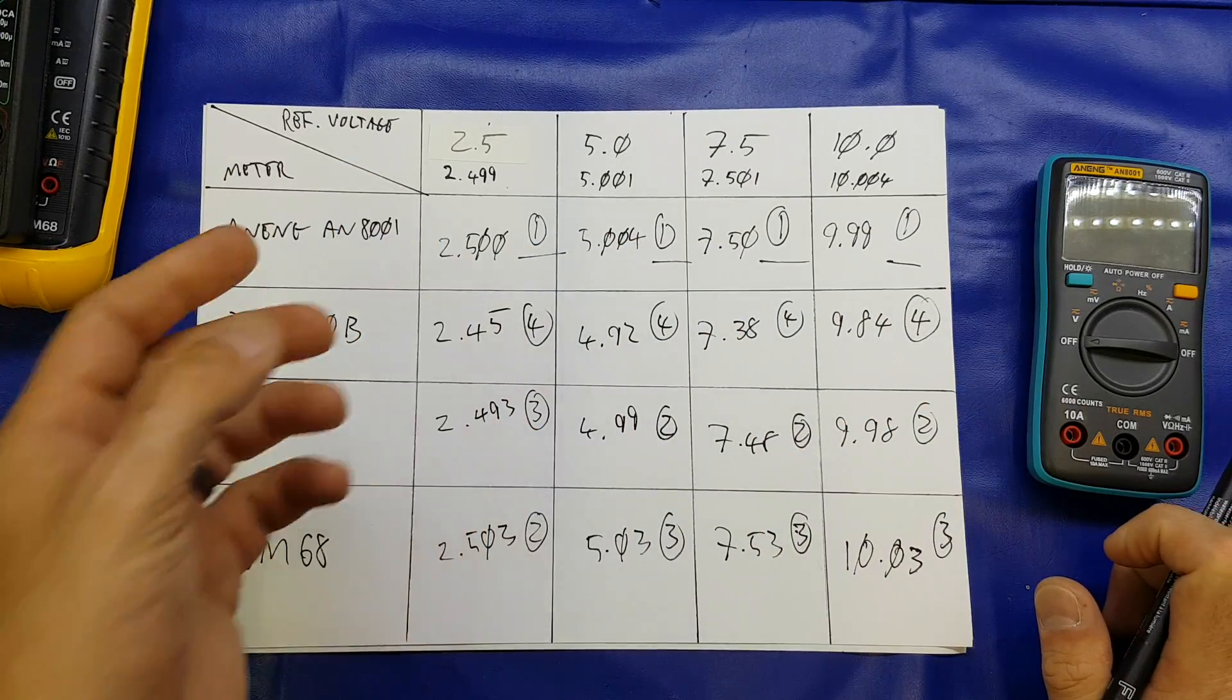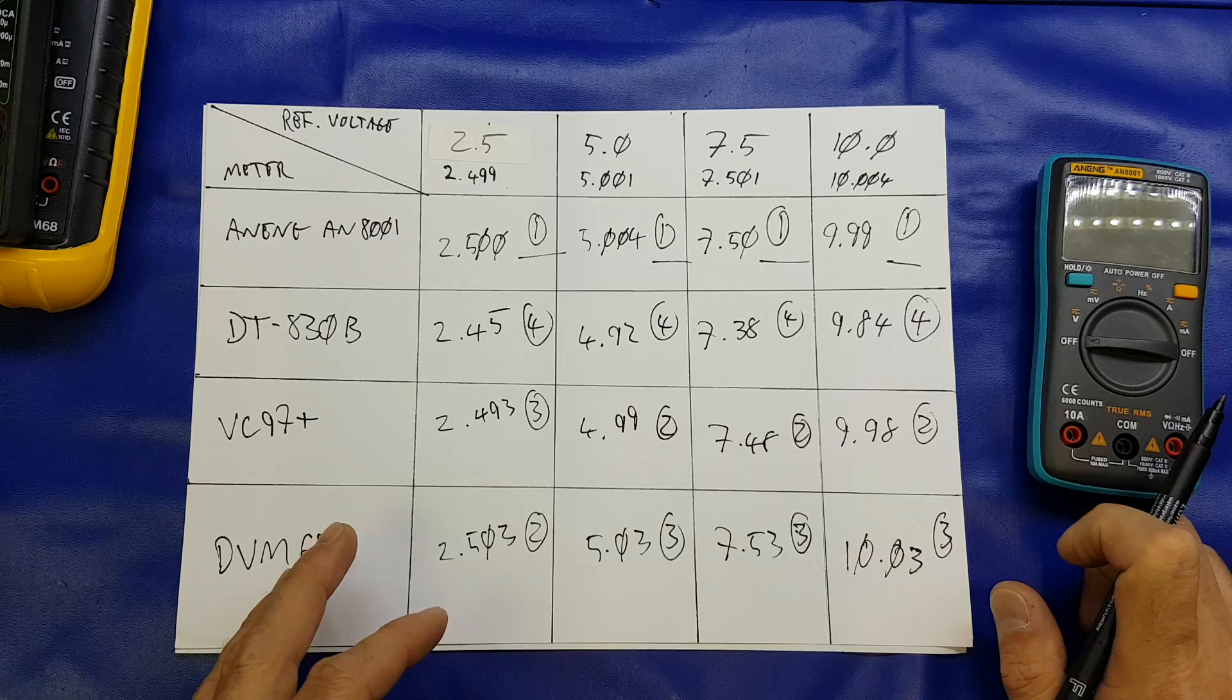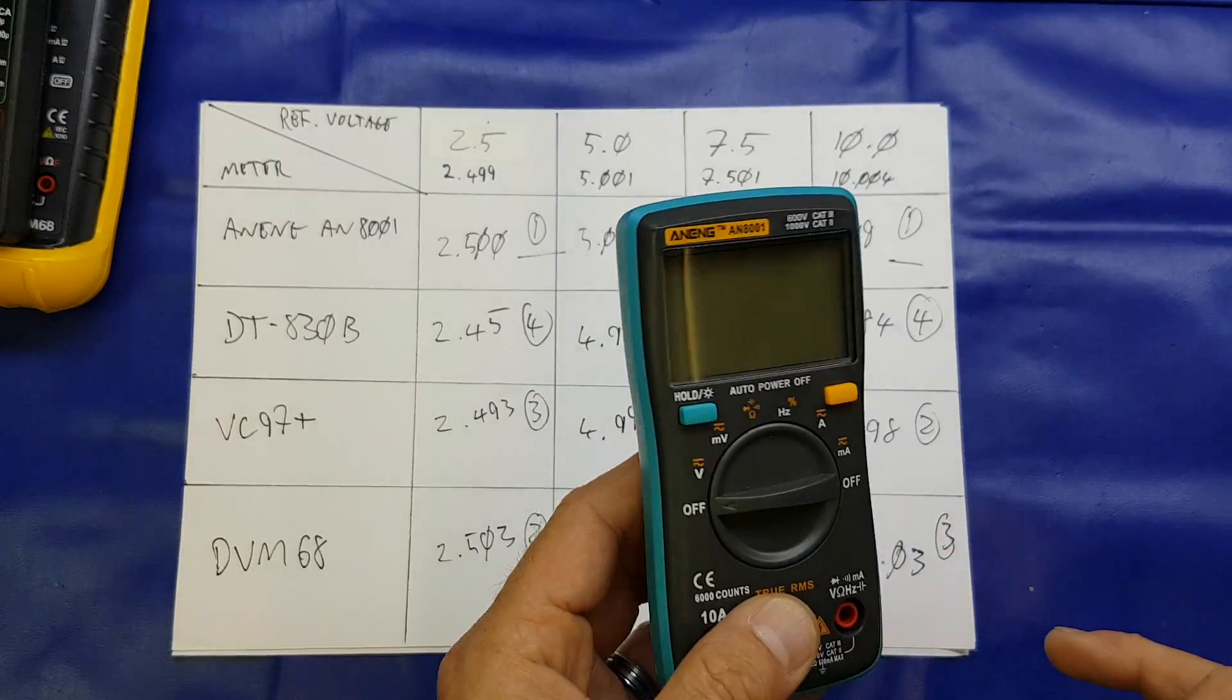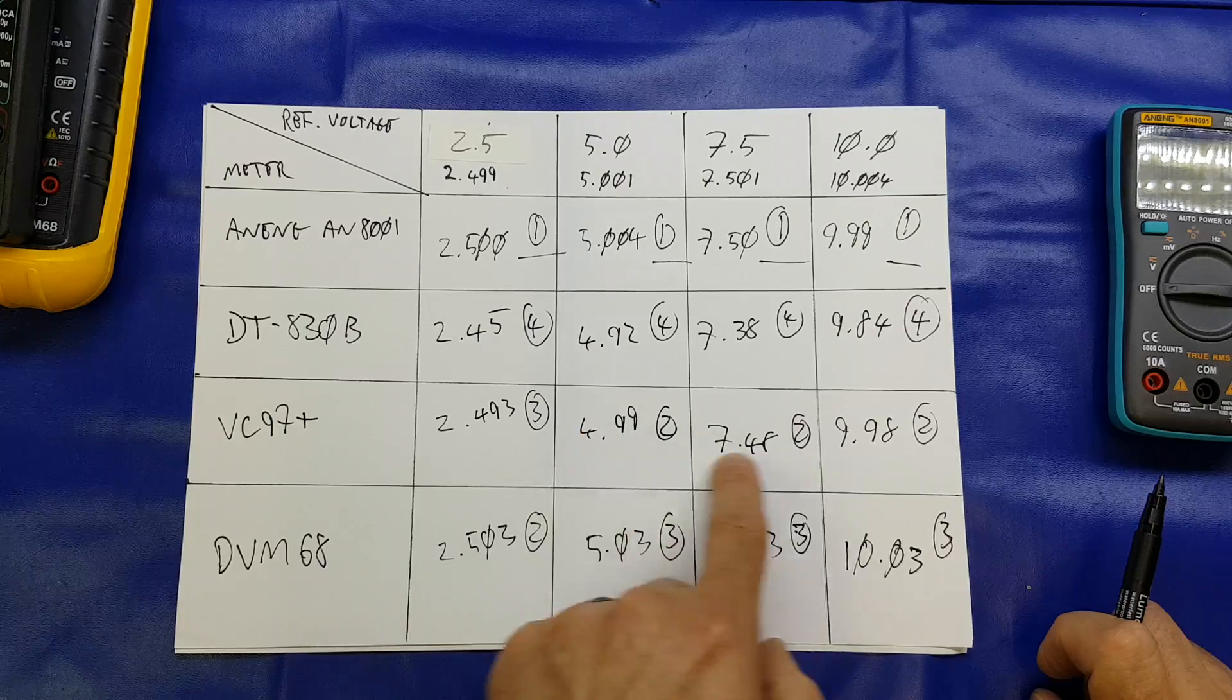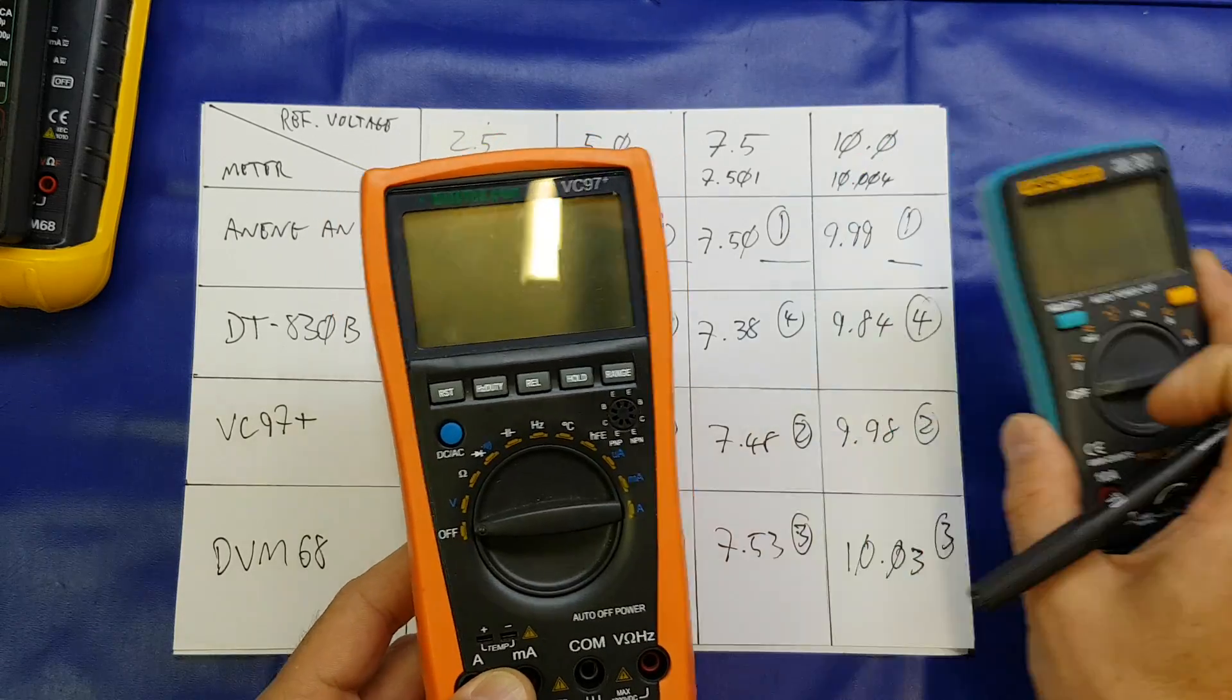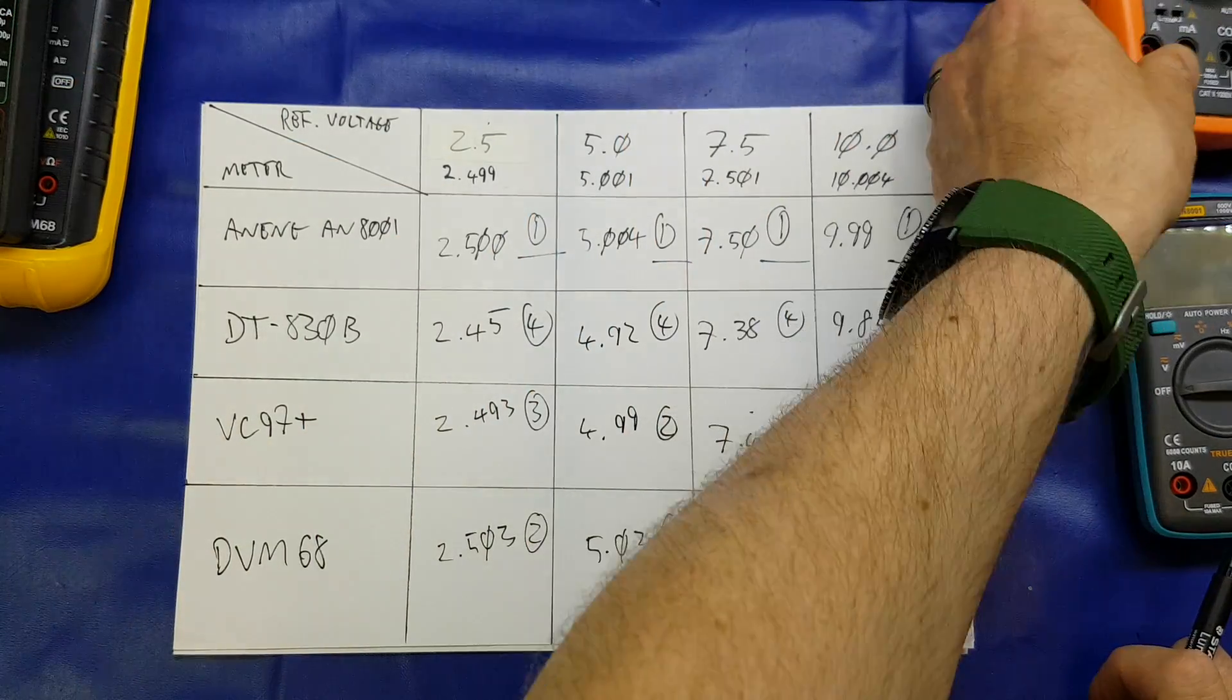Yeah, not a lot in it, 0.001 in some instances, I think the highest off is 0.01 of a volt, absolutely superb accuracy for a budget meter, 10 pounds, remember this cost, really really good. Second place, we've got three twos on there, on the VC97, that is my, was originally my go-to meter, until I got that, but it's now my second place meter, and based on that, it is second place in terms of accuracy.